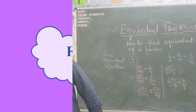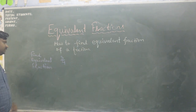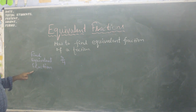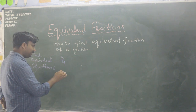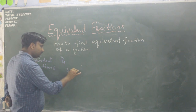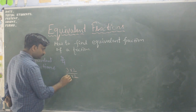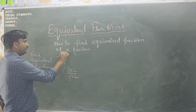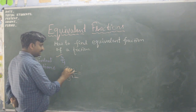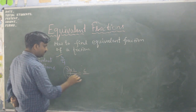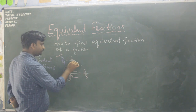Now the question is: find equivalent fractions for three upon four. Let us multiply numerator and denominator by 2: 3 twos are 6, 4 twos are 8. So another equivalent fraction is six upon eight.